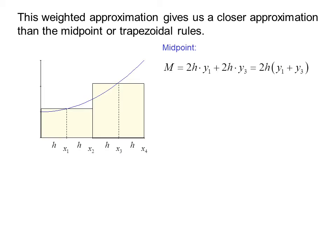If we use the midpoint rule here, M would be 2h (the width of a subinterval) times y₁ — which is this height right here — plus 2h times y₃. Factoring out 2h, we get M equals 2h times (y₁ plus y₃).